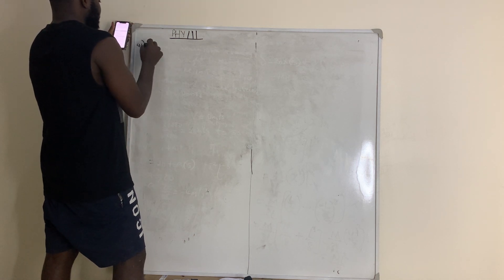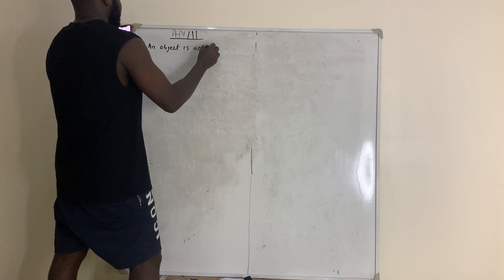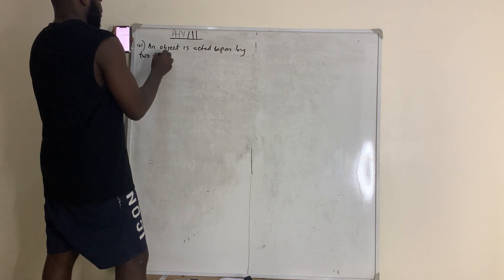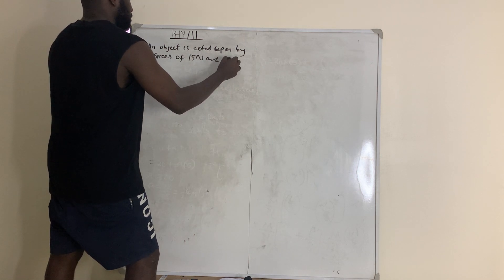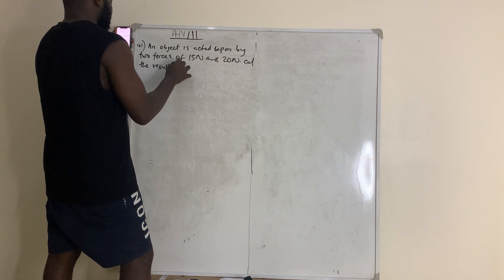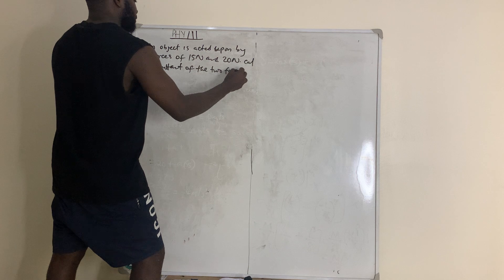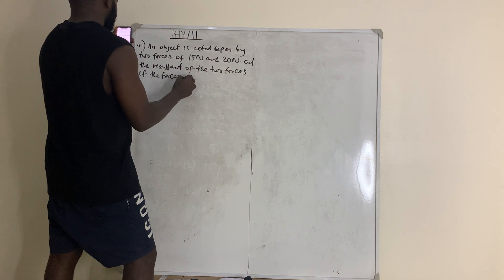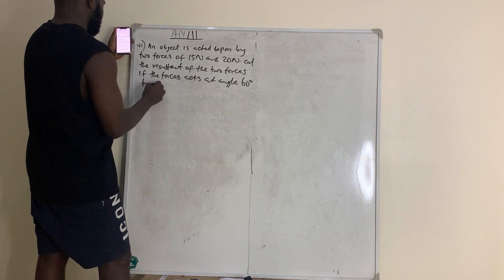Question number 41 says: an object is acted upon by two forces of 15 newtons and 20 newtons. Calculate the resultant of the two forces if the forces act at an angle of 60 degrees to each other.